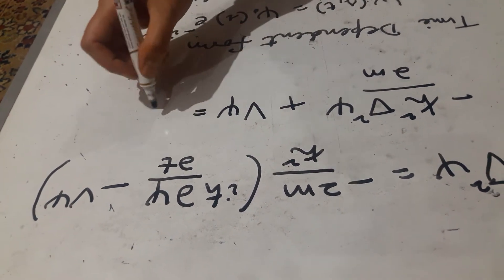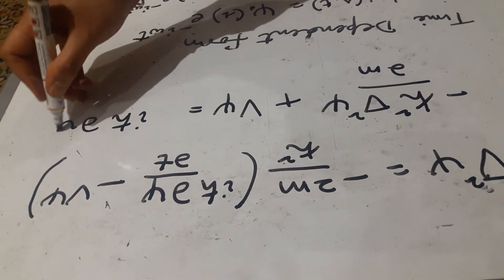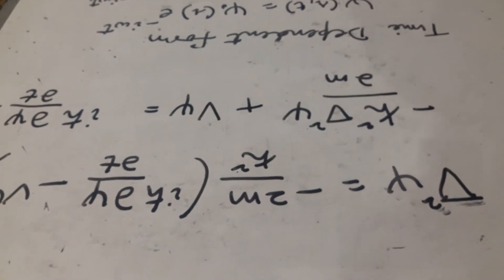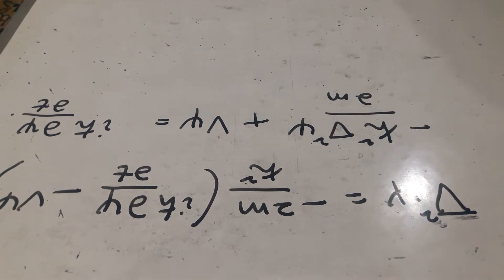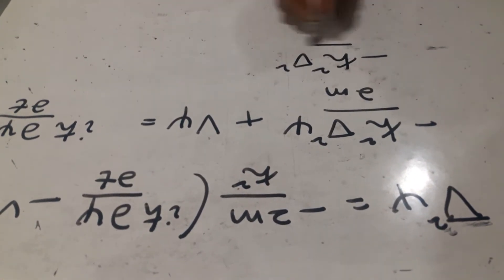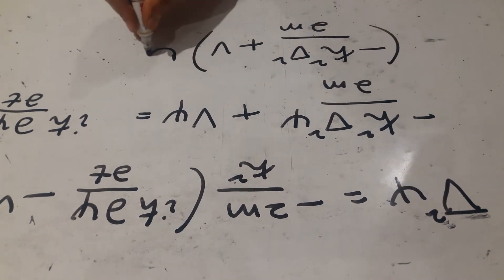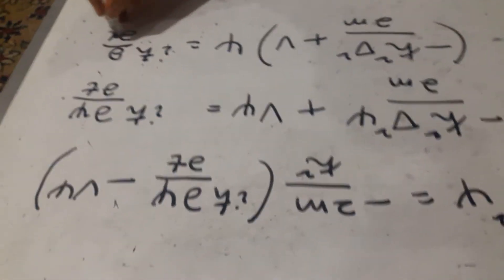On the right, we have i h cross dow psi by dow t. So we are done with h cross square del square by 2m plus v of psi is equal to i h cross dow by dow t of psi.